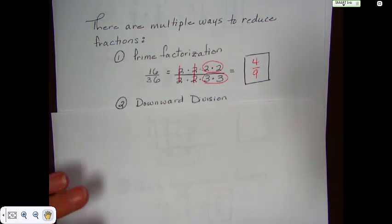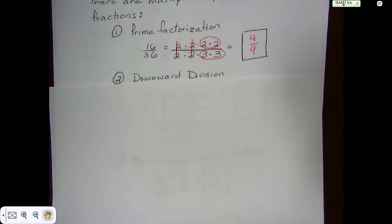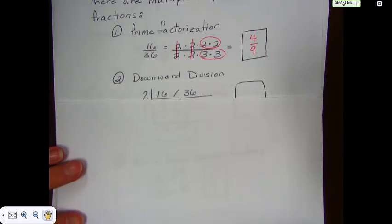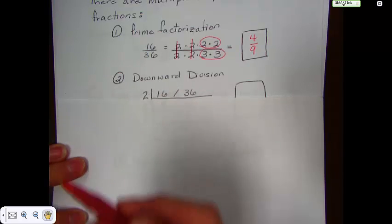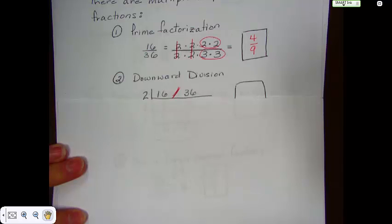Now we can use the same numbers and we can do this using downward division. Downward division, I taught you this year, is very popular, being used all over the United States, so this is not uncommon. First of all, you would set your 16 and 36. Remember to put this in here to remind yourself this is a fraction that we're reducing.